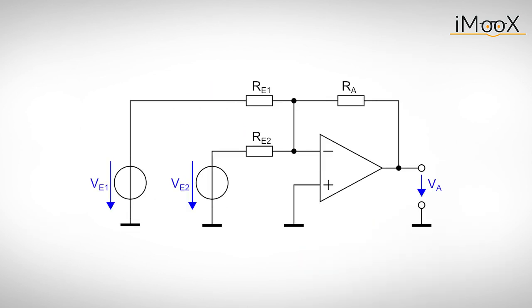Next is the analog summing amplifier. As you can see this circuit is very similar to the inverting amplifier we just talked about. We just added another input resistor Re2. Since there are two input voltages now we apply the superposition principle.